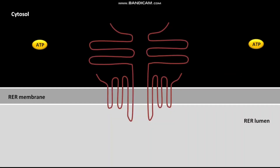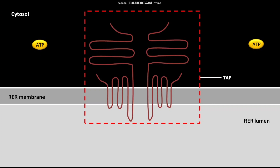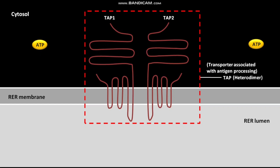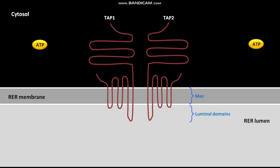The rough endoplasmic reticulum (RER) membrane has anchored TAP. TAP stands for Transporter Associated with Antigen Processing. TAP consists of two proteins called TAP1 and TAP2. Both TAP1 and TAP2 have luminal domains, multiple membrane-spanning domains, and cytosolic domains. The cytosolic domains of both TAP1 and TAP2 have ATP-binding domains, which bind to ATPs.